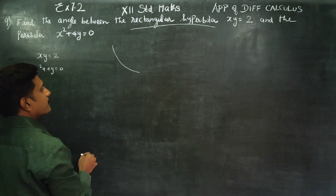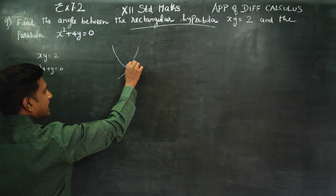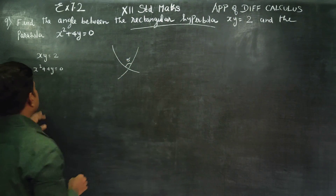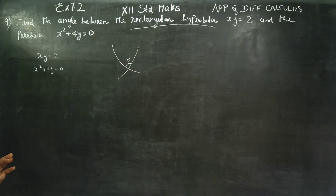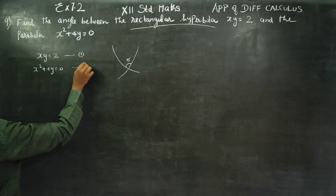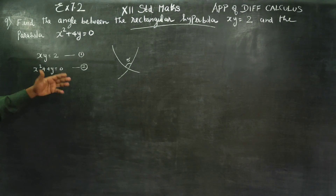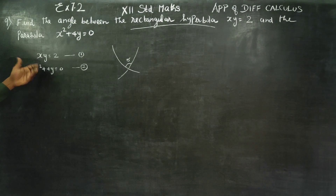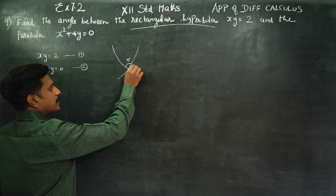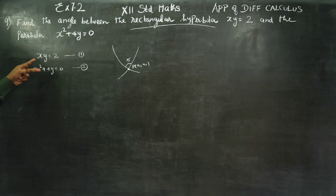So the two curves intersect and form an angle theta. We need to find the angle between the curves. Let equation 1 be xy = 2 and equation 2 be x² + 4y = 0. To find the point of intersection P(x1, y1), simplify and solve both equations simultaneously.